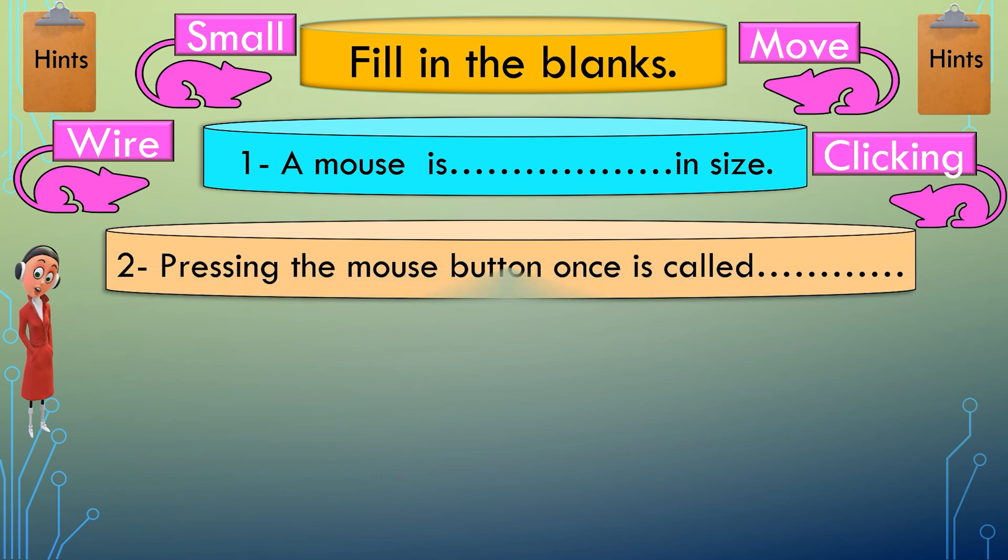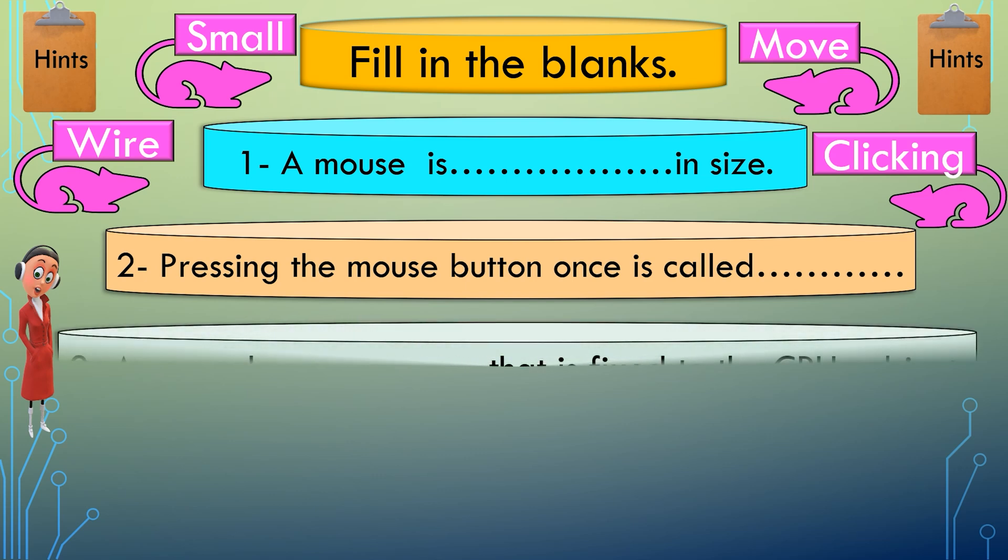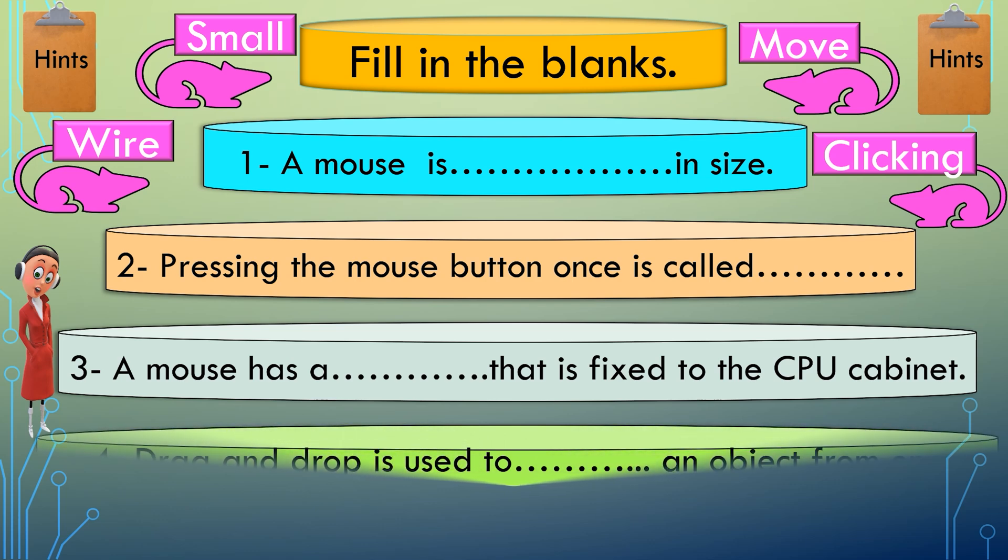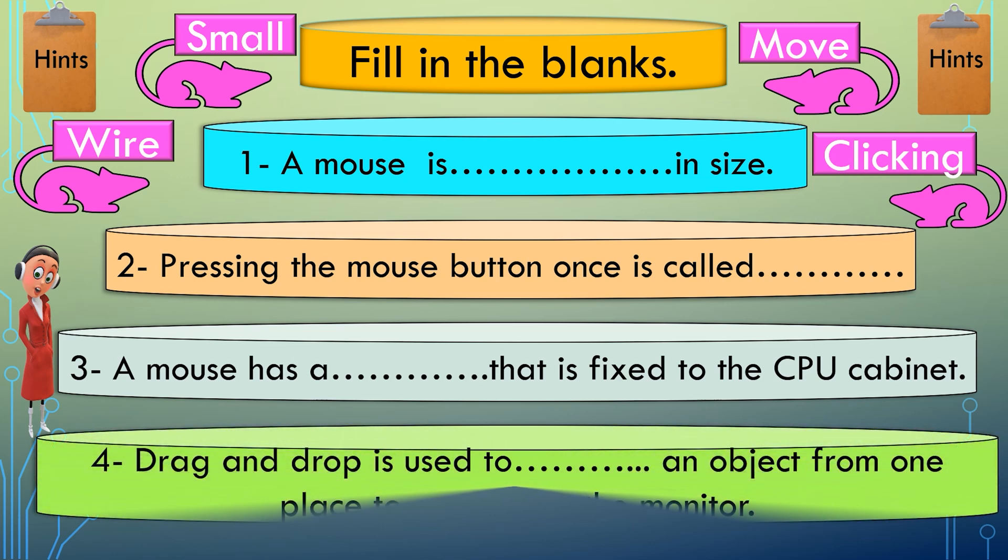A mouse is dash in size. Pressing the mouse button once is called dash. A mouse has a dash that is fixed to the CPU cabinet. Drag and drop is used to dash an object from one place to another on the monitor.